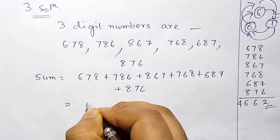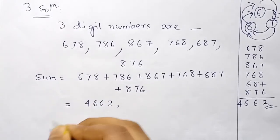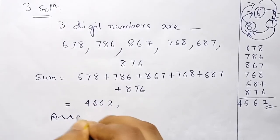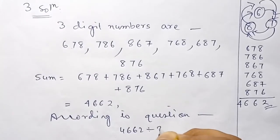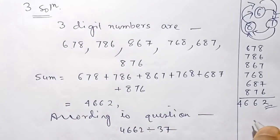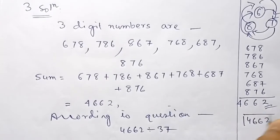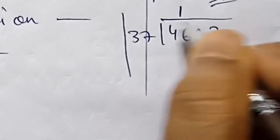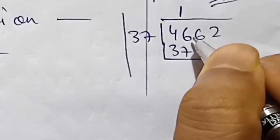The sum is 4662. According to the question, we check whether 4662 is completely divisible by 37. When we divide 4662 by 37, we get 126. So 4662 is divisible by 37, which confirms the result.